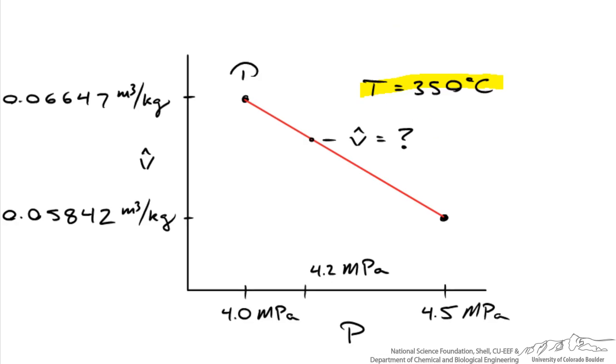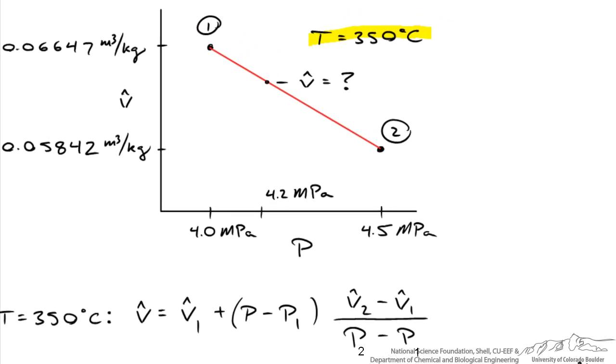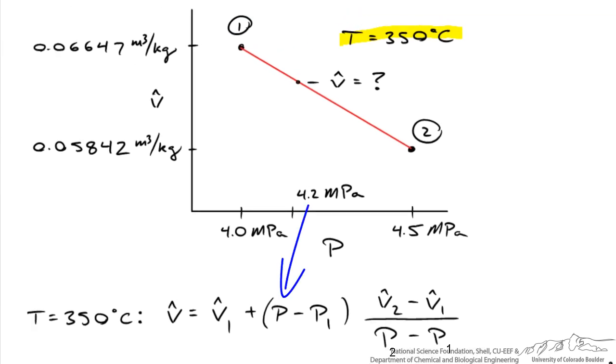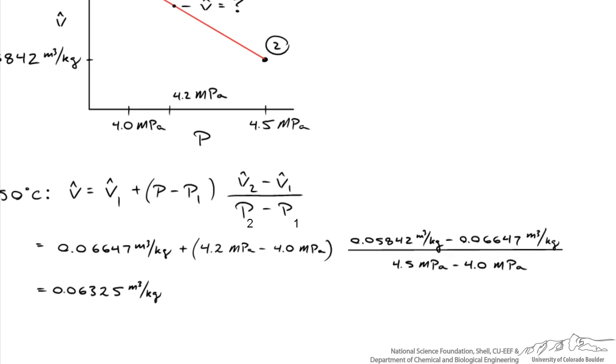So let's call this 0.1 and we'll call this 0.2. And here's the equation to linearly interpolate. So at 350 degrees C, I'll pick a pressure of 4.2 MPa. I'll plug that in, I know P1 and P2. And what I come up with, when I enter numbers into this, is this expression.